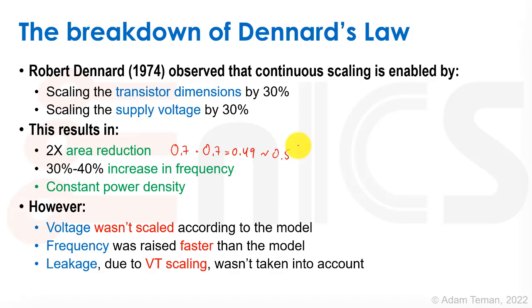However, we didn't scale the voltage according to the model — partly due to interface standards requiring fixed voltages. Voltages stayed at 5V for a long time, then dropped to 3.3V, 2.5V, and 1.8V, but didn't scale at the same rate as transistor dimensions. Frequency was raised faster than the model because we wanted faster chips. Leakage was also overlooked as a factor, and as we scaled VT to maintain performance, sub-threshold leakage became dominant.